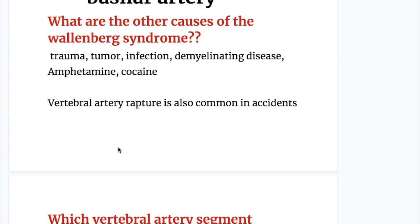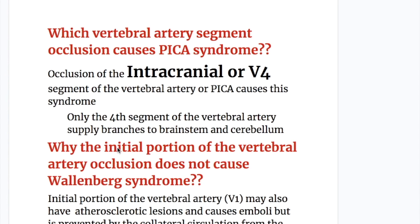What are the other causes of Wallenberg syndrome or PICA syndrome? Trauma, tumour, infection, demyelinating diseases. What drug may cause PICA syndrome? Amphetamine and cocaine. Vertebral artery rupture is also common in accidents causing Wallenberg syndrome.